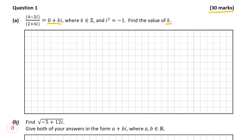Basically what we have to do for this question is we have a fraction that involves two complex numbers on the numerator and the denominator. We must simplify this fraction so it is just a complex number with no fractions. One thing we need to know about complex numbers before we tackle this question is we must know about complex conjugates.